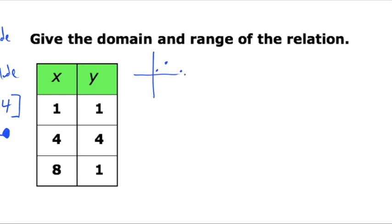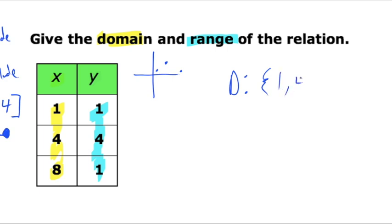Because discrete points are individual, we talk about domain and range a little differently. Your domain is your x values, so 1, 4, and 8 are going to be my domain. When it is a discrete relationship, we use curly brace set notation. So the domain is written as a set: curly brace, and then we list the x values — 1, 4, and 8 — and close the curly brace.